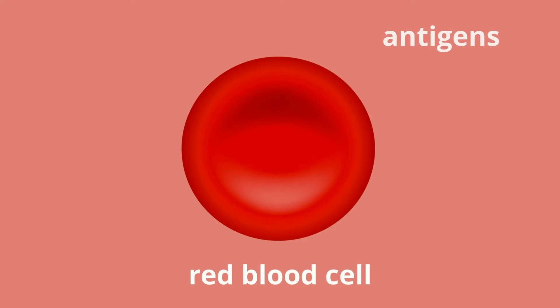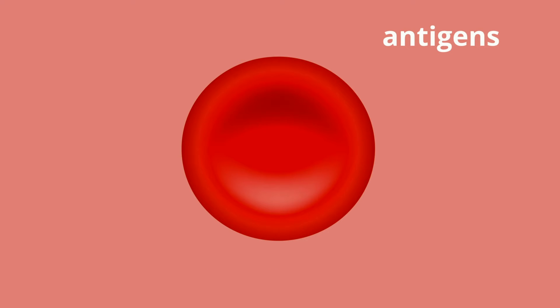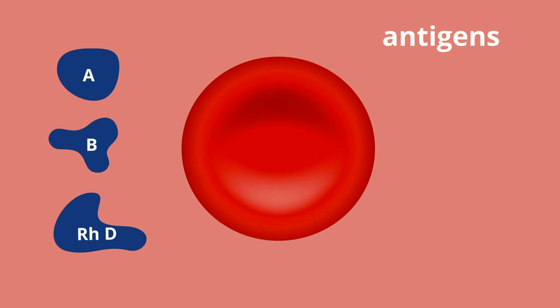Another part of blood is antigens. Antigens are other special proteins on the surface of each red blood cell. They give the cell its blood type. Major blood antigens are the A, B, and RHD antigens.